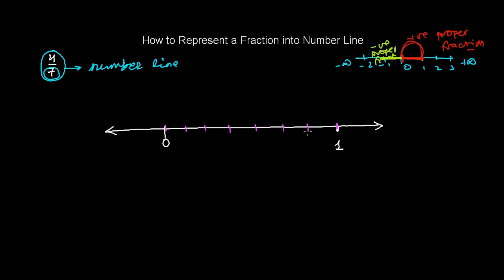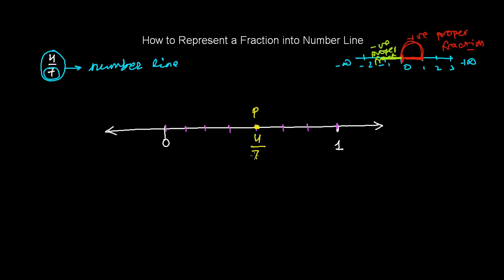So let's make 7 equal sections: 1, 2, 3, 4, 5, 6, and 7. We now have 7 equal sections. To represent 4 over 7, count four sections from the left starting at 0: 1, 2, 3, 4. We are here — this is our point P, which is the fourth point out of seven on the segment from 0 to 1.